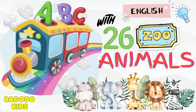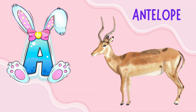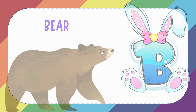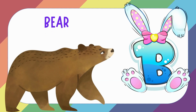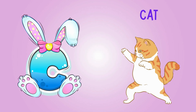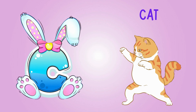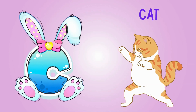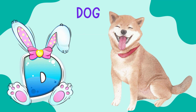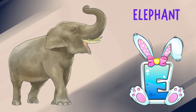Let's learn the English alphabets with awesome zoo animals. A is for antelope. B is for bear. C is for cat. D is for dog. E is for elephant.